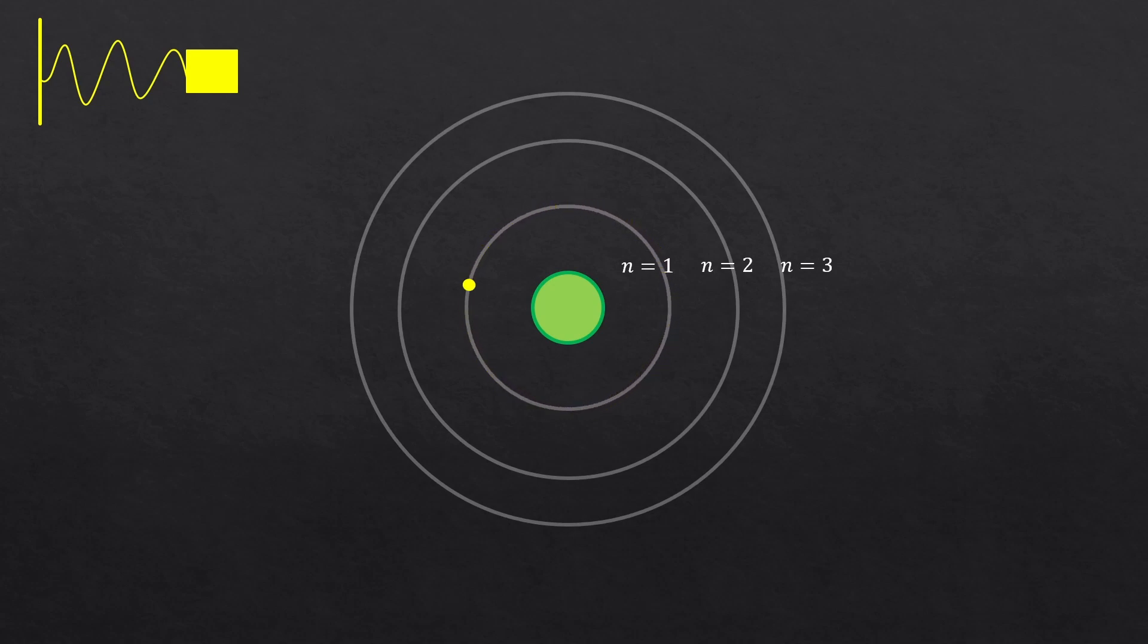What is this kinetic energy? Half mv squared, right? But as this is a circular motion, let's express it in terms of angular velocity omega instead of the velocity v.